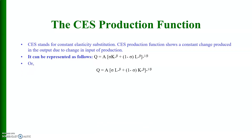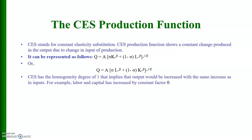Alternatively, it can be written with labour first and capital second — both forms are acceptable. The CES production function has homogeneity of degree one, which implies that output would increase by the same proportion as inputs. For example, if labour and capital have been increased by the constant factor theta, the production function can be written accordingly.